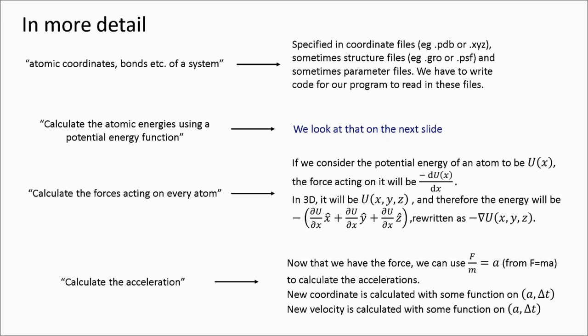Looking at the system in more detail, the system information is first specified, usually in a group of files. A coordinate file, such as a PDB or XYZ file, a structural file, such as a PSF or GROW file, and usually a force field parameter file, such as a PRM file.